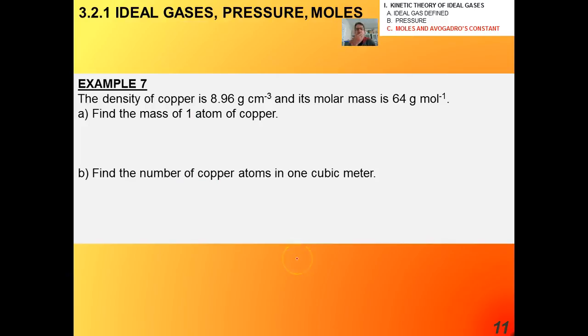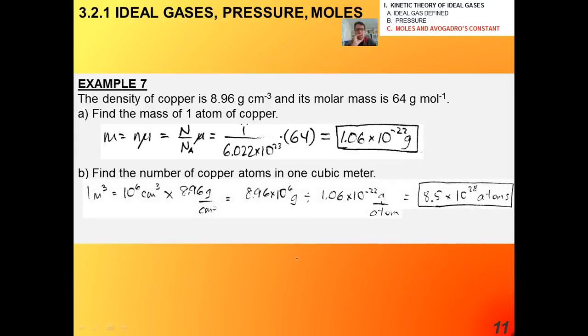And another example, try this one for copper. So the mass of one atom of copper. Again, remember your problem-solving skills and being able to tell whether your answer makes sense. You want something very, very, very small here, right? And in fact, you get 1 times 10 to the minus 22 grams. The number of copper atoms in one cubic meter, that's going to be really, really, really big. That's about 9 times 10 to the 28 atoms. Remember, one cubic meter is pretty big.